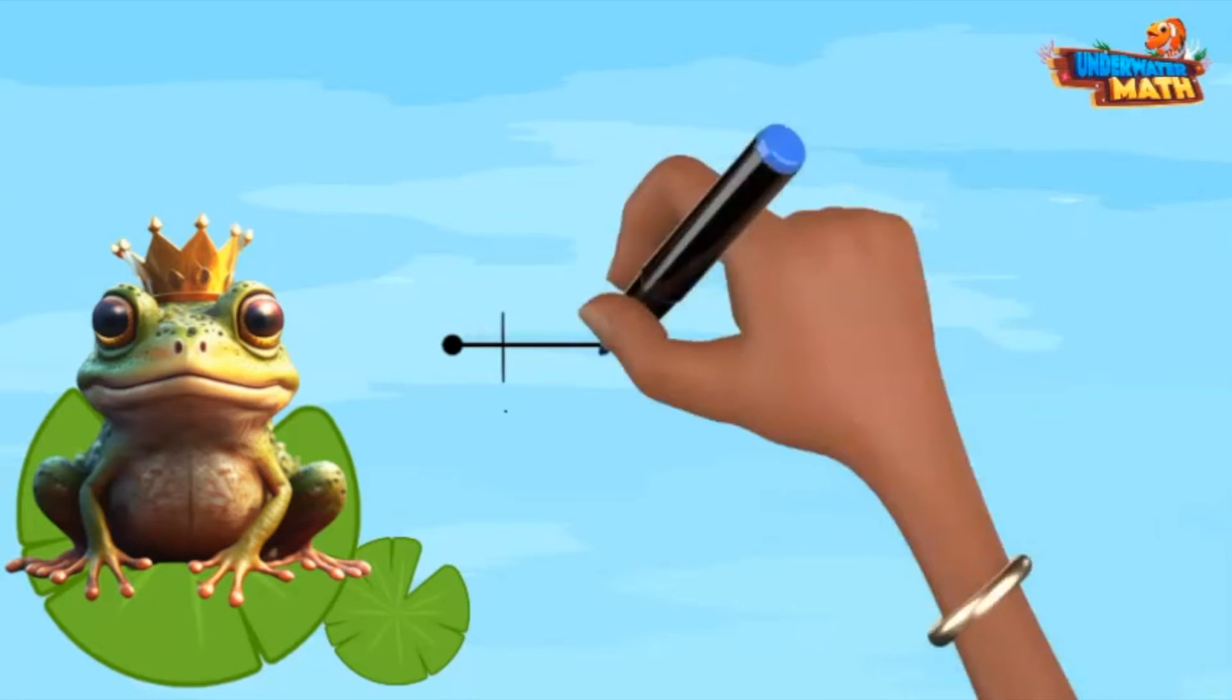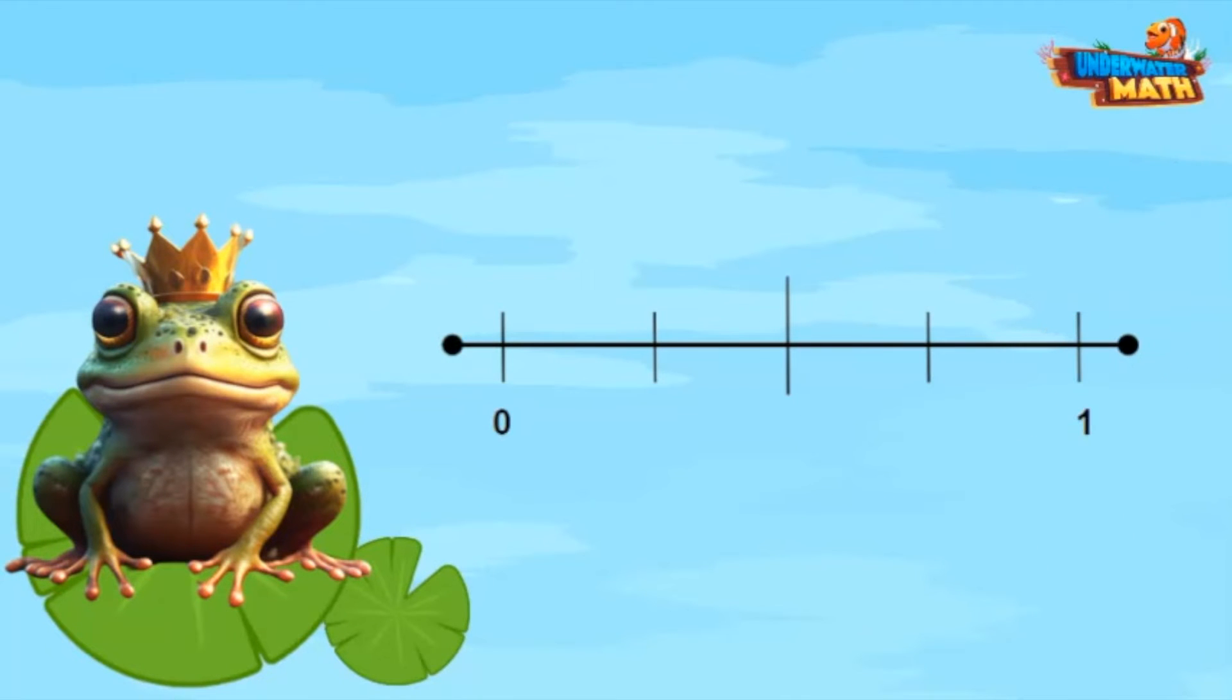Here is a number line now. First, I need to make sure that the number line is divided into equal parts, which it is. I always start at zero and hop on each of the hash marks represented until I reach one. One, two, three, and four. This number line is divided into four equal parts or fourths.